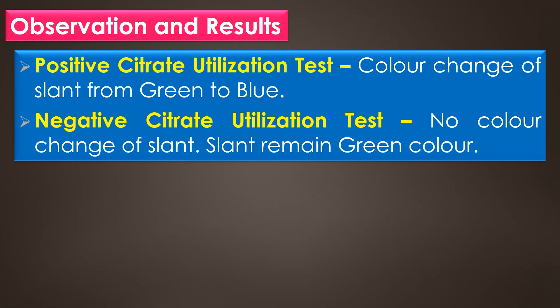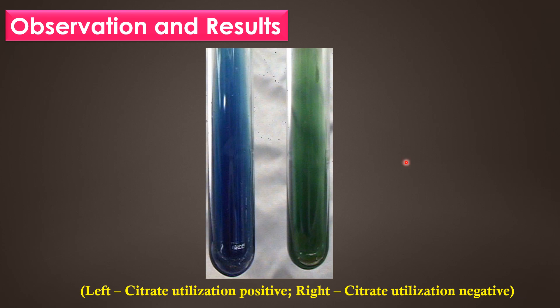Observation and results: a positive citrate utilization test shows a color change of the slant from green to blue, and a negative citrate utilization test shows no color change and the slant remains its original green color. This image shows the citrate utilization positive and negative slants. The tube on the left side shows citrate utilization positive, where the color change from green to blue is observed. The tube on the right side shows citrate utilization negative, where no color change occurs and the slant remains its original green color.